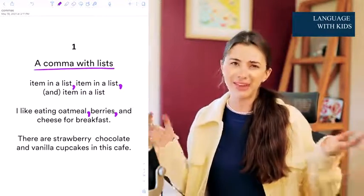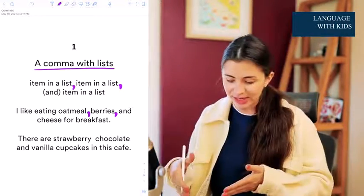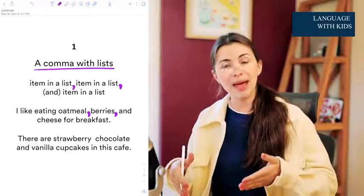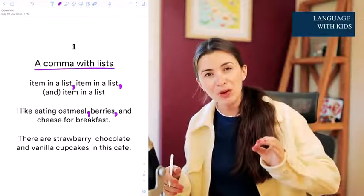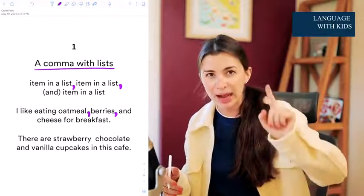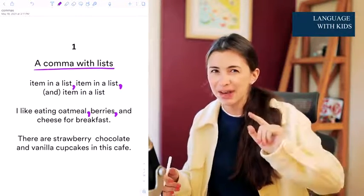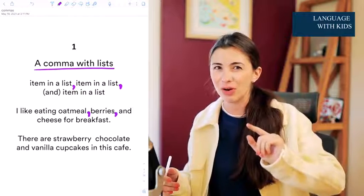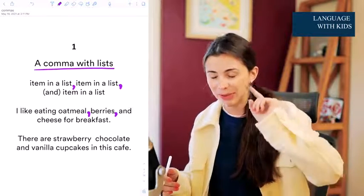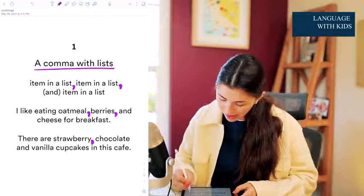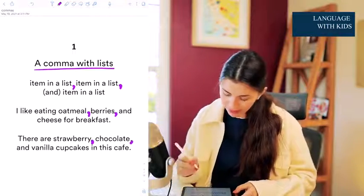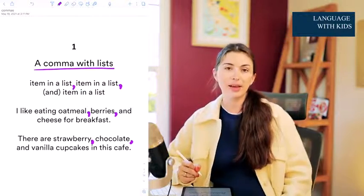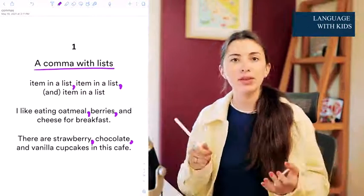So obvious, very easy. You have a list, you separate your objects in the list with a comma, and you put a comma before 'and.' This is super important because in some languages, if you have 'and' you don't put a comma in a list, but in English you do. There's strawberry, chocolate, and vanilla cupcakes in this cafe.